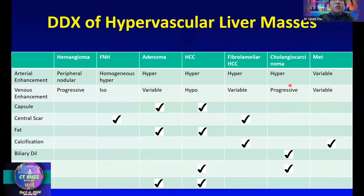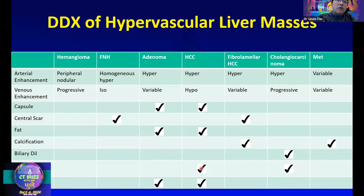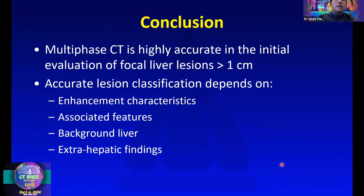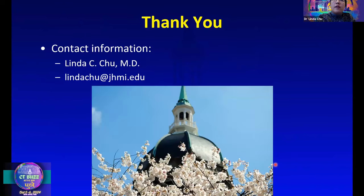In summary, I've reviewed the major imaging findings of hypervascular lesions. Looking at the enhancement pattern on arterial and venous phase is critical. Ancillary features such as capsule, fat, or bleeding narrow the differential to adenoma and HCC. Central scar can be seen in FNH and fibrolamellar HCC. Calcification is most helpful for fibrolamellar HCC and certain metastases. Vascular invasion is seen most commonly with HCC but also with cholangiocarcinoma. Multi-phase CT is highly accurate for focal liver lesions greater than one centimeter, and accurate characterization depends on enhancement characteristics, associated features, background liver, and extrahepatic findings.